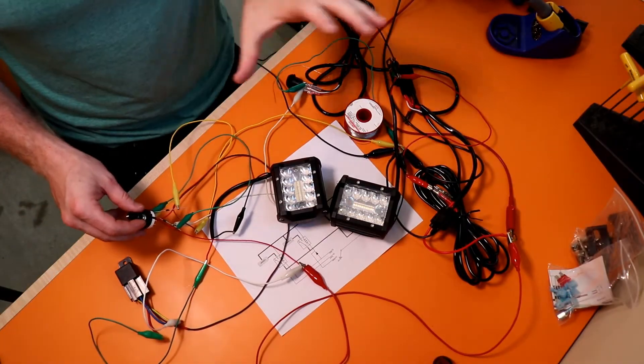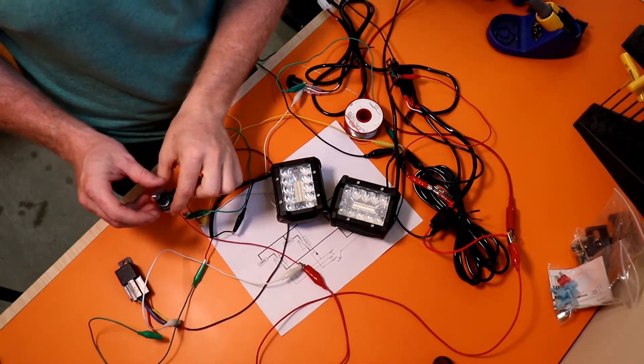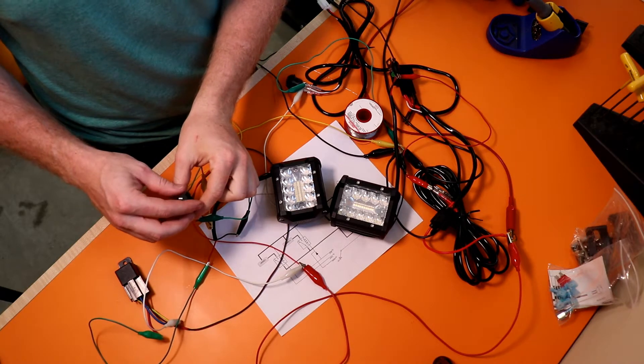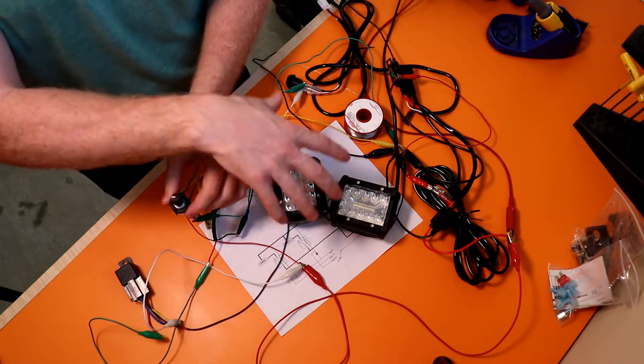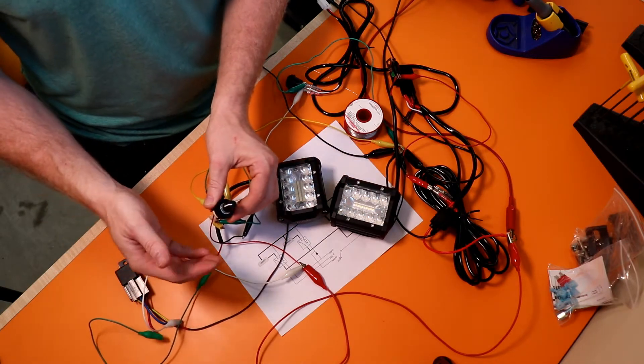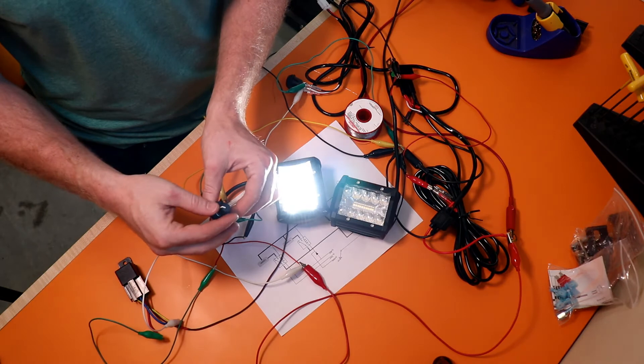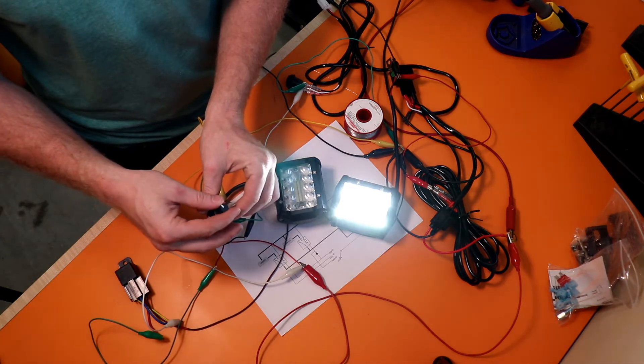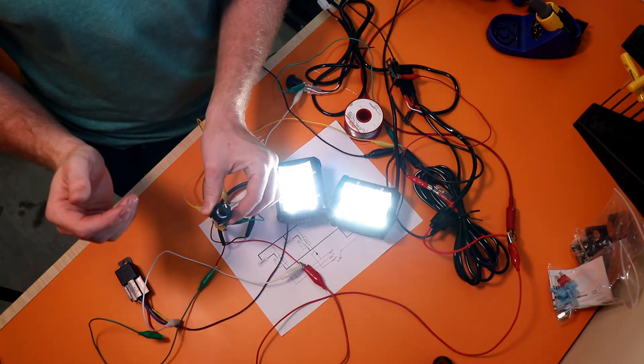So I have this kind of breadboarded out, if you will, in wires and just a proof of concept. So one of these represents the upper and one represents the lower. So zero turn is off, next turn is one on, next one is the other ones on, and then both are on.